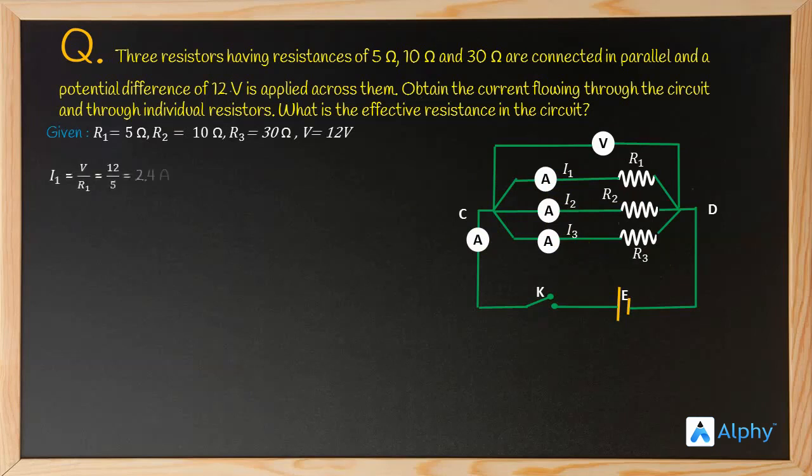Using Ohm's Law, current is directly proportional to potential difference, with R as the proportionality constant. So V equals IR, which gives us I equals V by R.